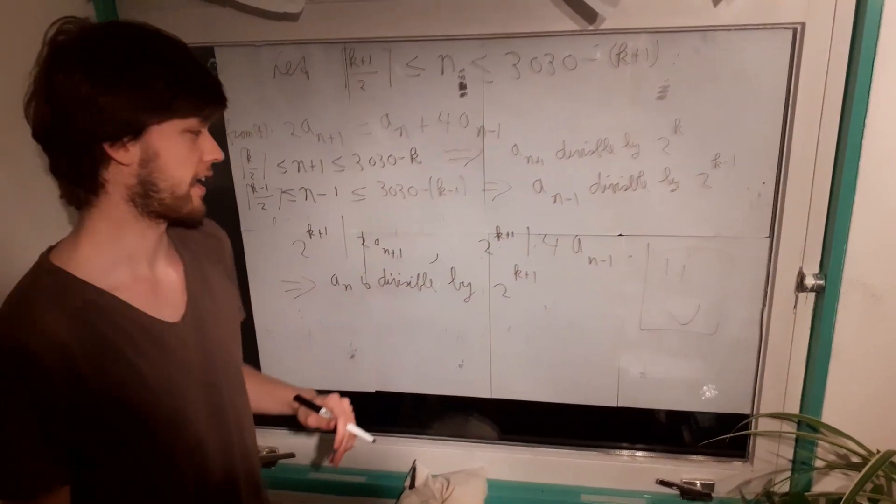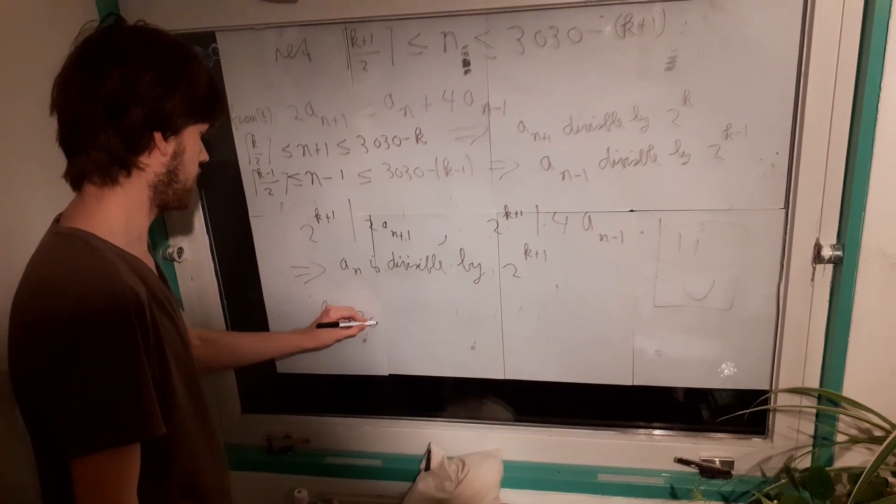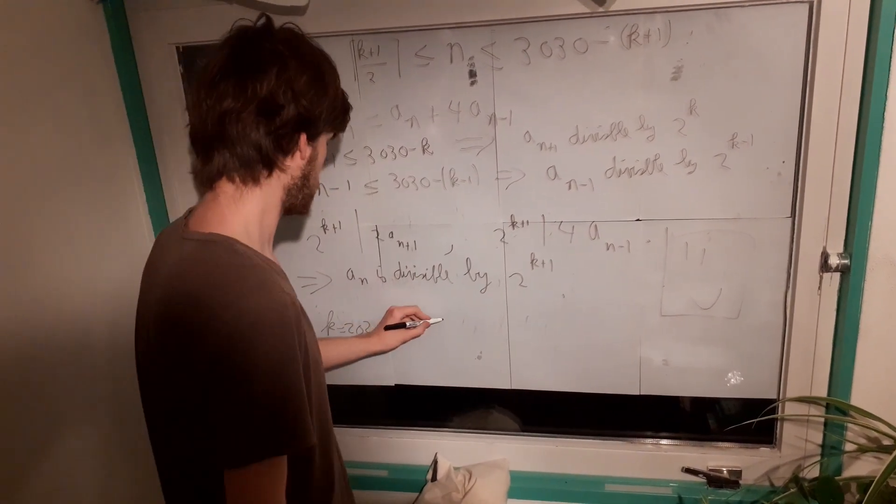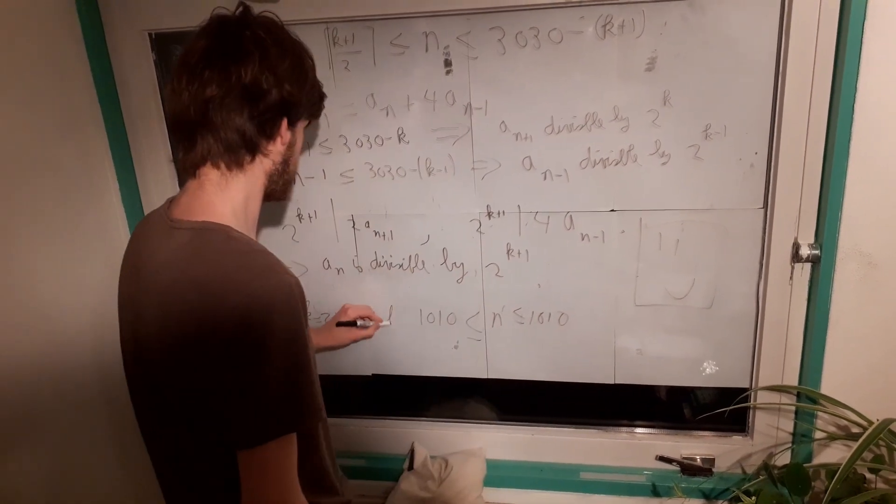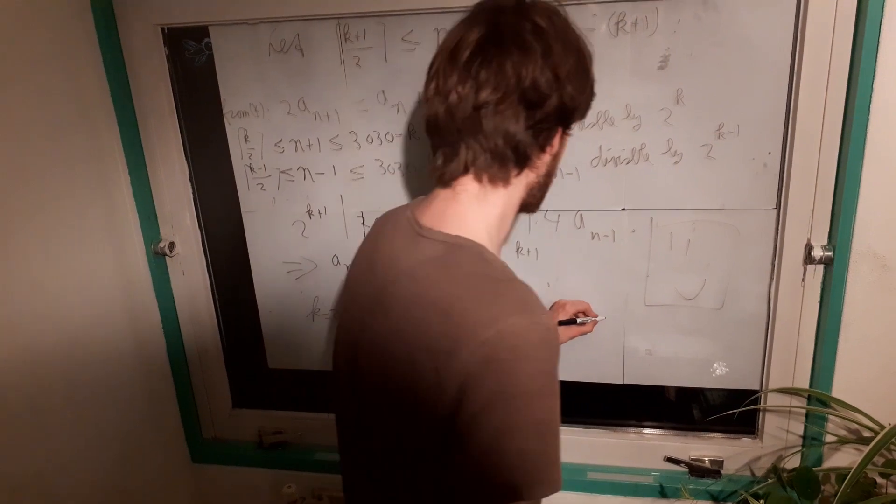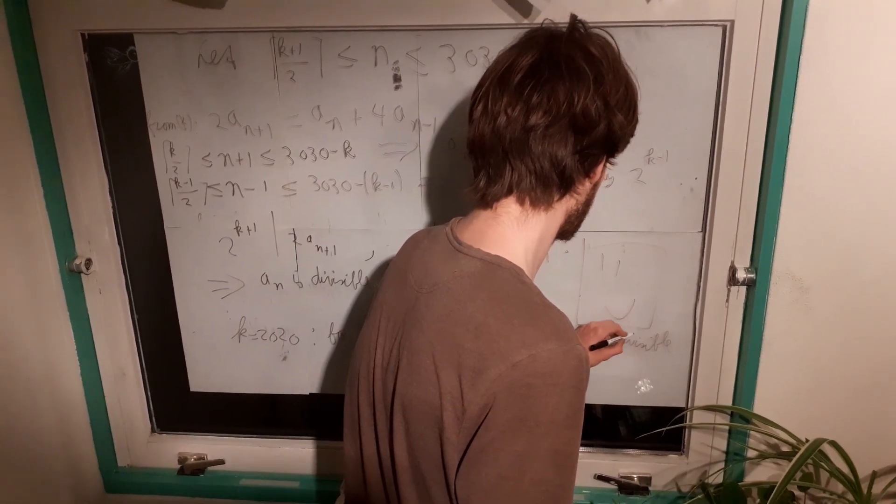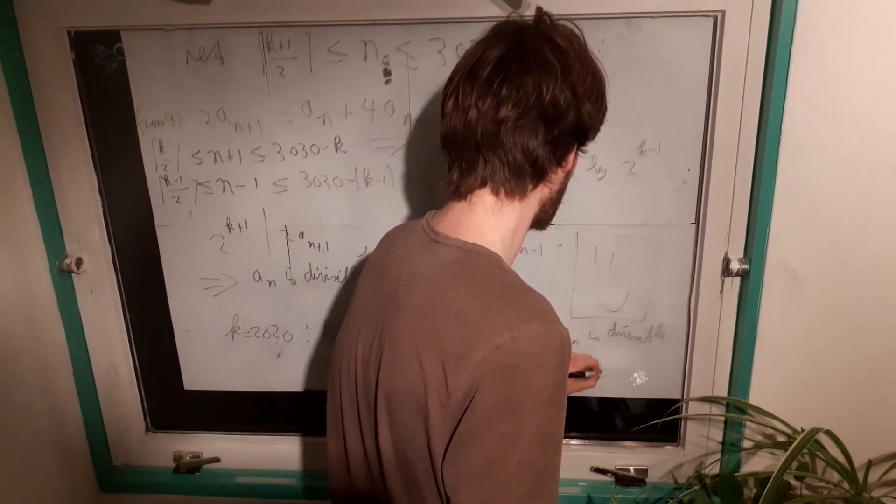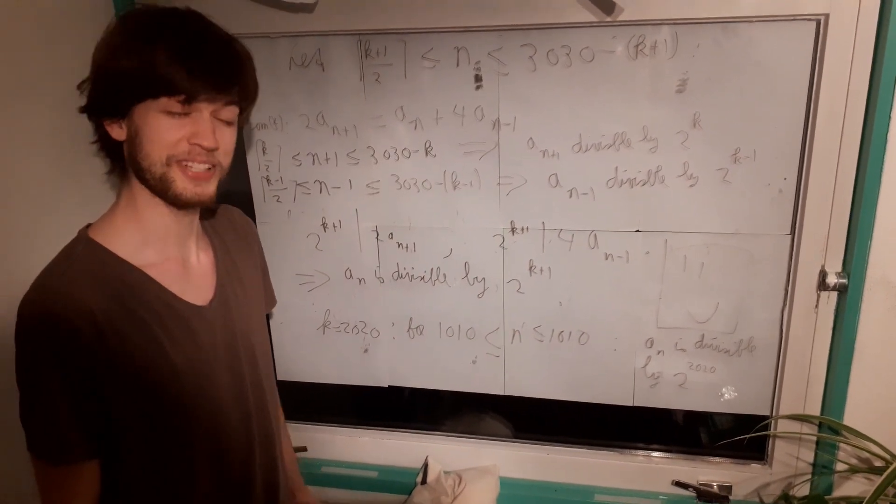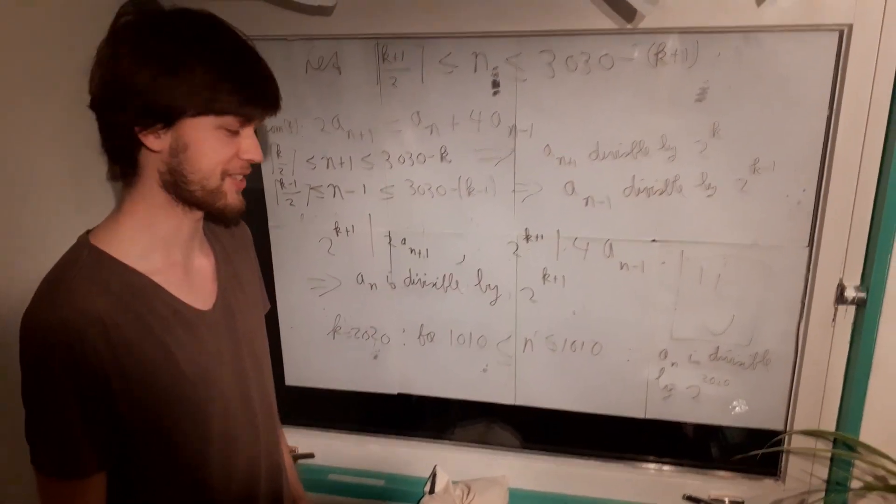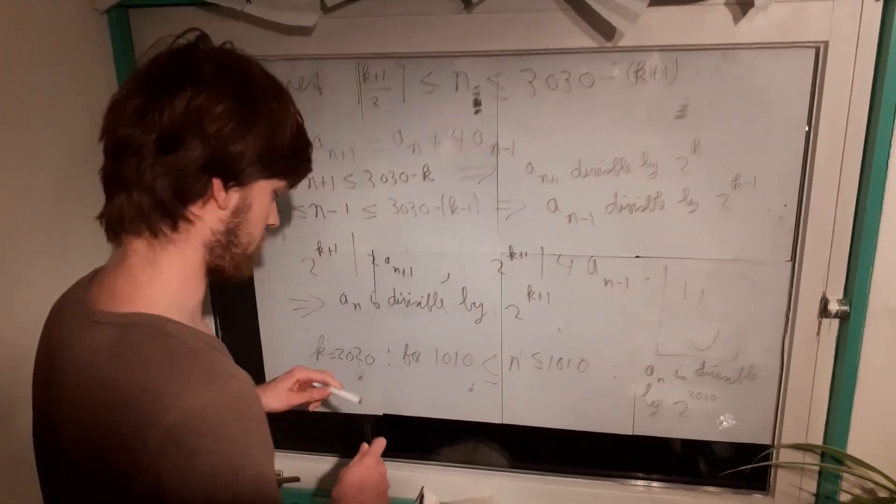So we can complete our cake all the way to the top. And now the only thing that is left is to put k as 2020. And see what the statement says. It says that for n between 1010 and 1010, this will be exactly one number. We have a_n is divisible by 2 to the power of 2020. And then we are done. Thanks for watching. And leave a like and please, what do they always say? Subscribe. Subscribe so that you never miss another solution on this window.